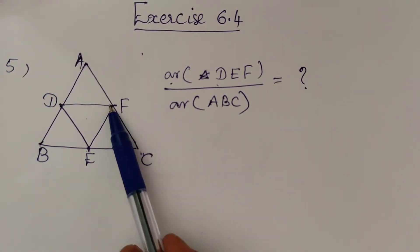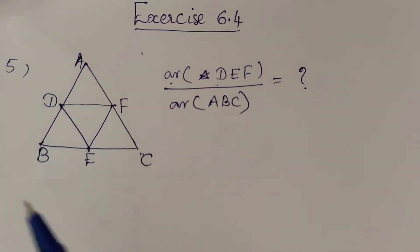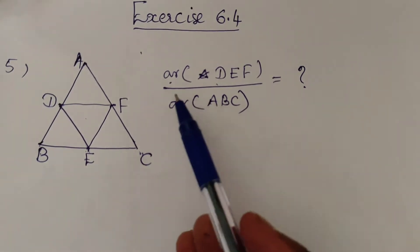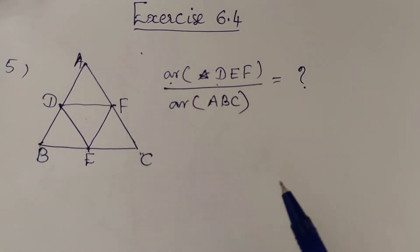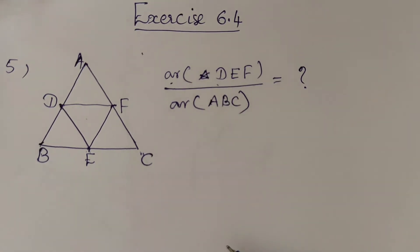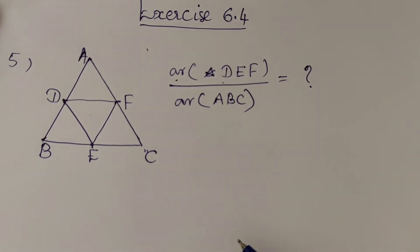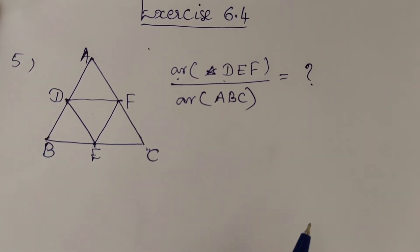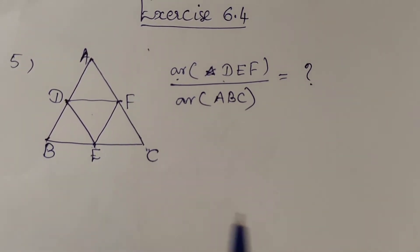D is the midpoint of BC and F is the midpoint of AC. We will find the area of DEF divided by area of ABC. The ratio of areas of two similar triangles is equal to the ratio of the square of their corresponding sides.